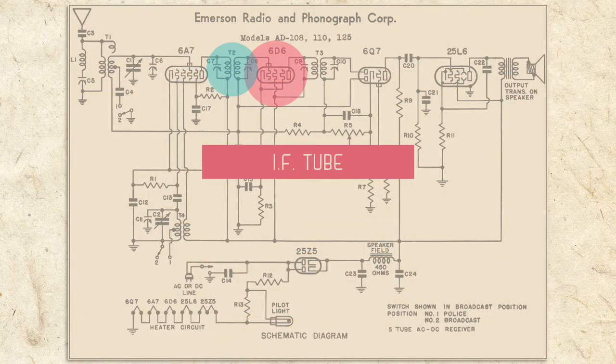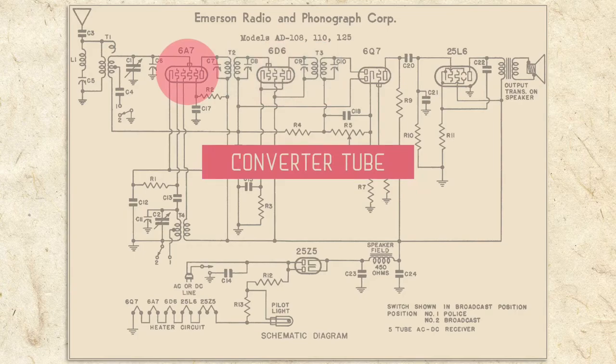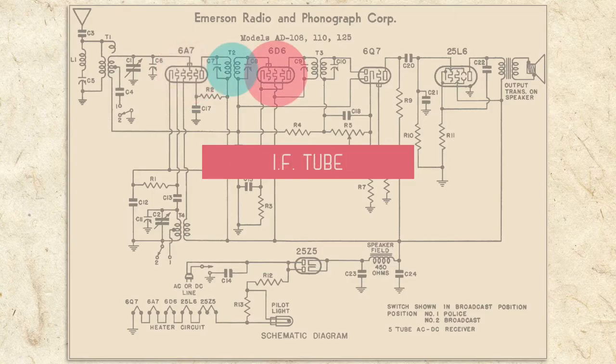After the first IF transformer, the IF signal is amplified by the IF tube and further refined by the second IF transformer. Unlike the complicated converter tube that oscillates, mixes, and amplifies, the IF tube just amplifies.